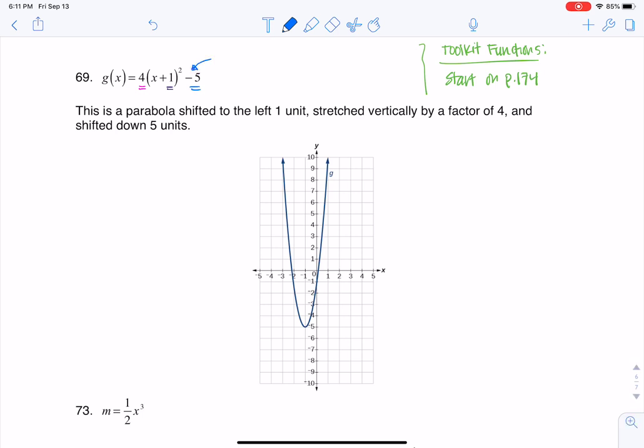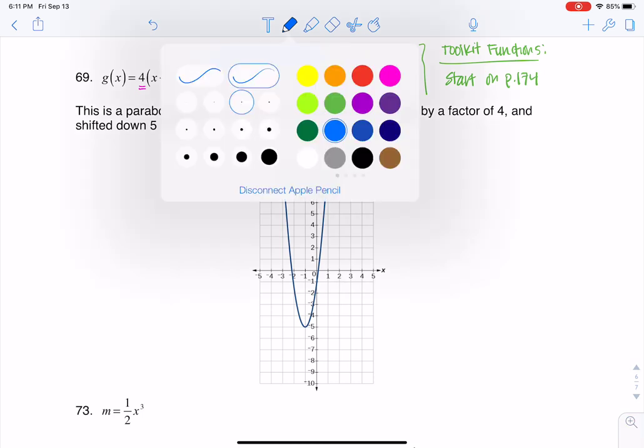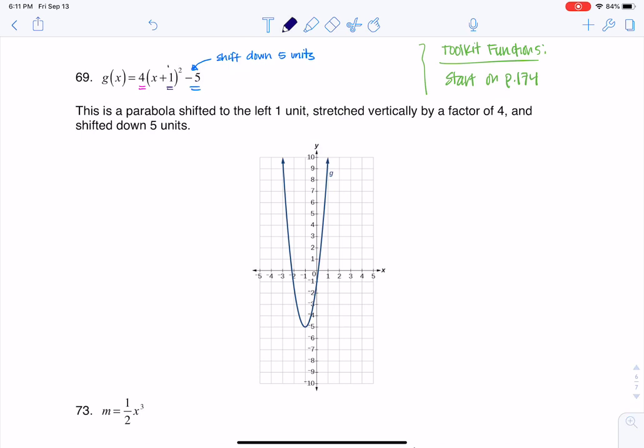This minus five outside the grouping symbols is going to shift my graph down five units. This plus one inside the grouping symbols, this is the one that's a little counterintuitive. This is actually going to shift your graph left one unit. And then this four on the outside, this is going to be a vertical stretch by a factor of four.